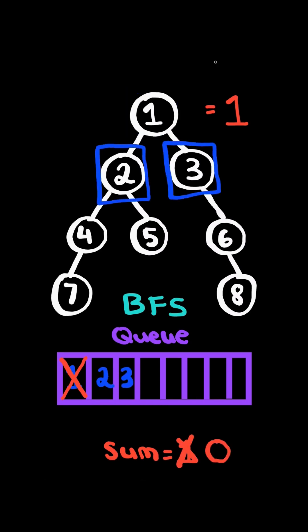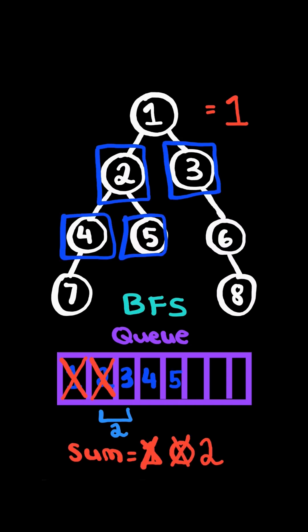Now we are on the next level so we reset sum to 0. Now we iterate through these two elements in the queue. We pop 2 and add it to the sum. We append 2's children 4 and 5.